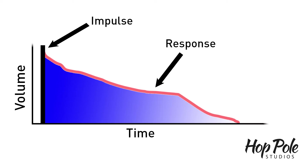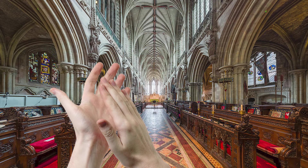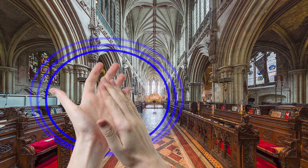Secondly, the part: response. That's the bit we're looking for. Here's an example. If you stand in a cathedral and you clap, does it sound like a click? No — your clap is the first part, the impulse, and the rest of that sound is the response. In that way, this is a great way to capture the reverb of a room.